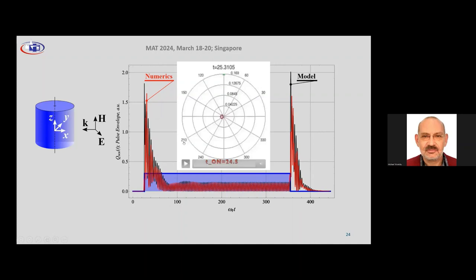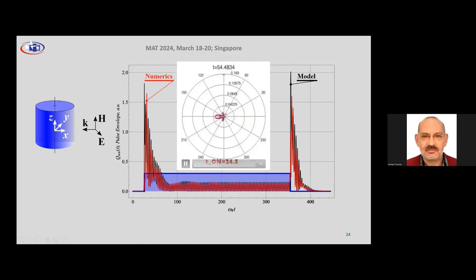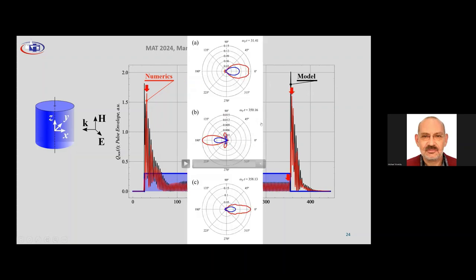Moreover, this scattering is accompanied by changes in the direction of the scattered radiation — visible in the movie. The red line is the instantaneous value of the scattered radiation and the blue line is the average over a period of oscillations. We can observe rather complex behavior, and at the trailing edge of the pulse we see a similar picture. There are several characteristic snapshots of the scattering diagrams, and importantly, the scattered radiation is confined in a relatively small solid angle — a nano radar with which one could study chromosomes, single living cells, or whatever is desired.